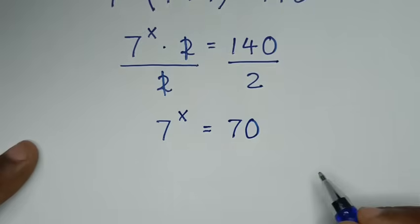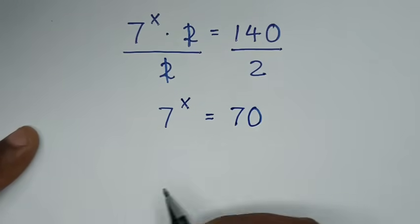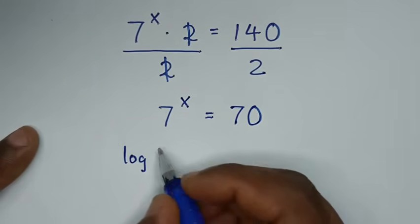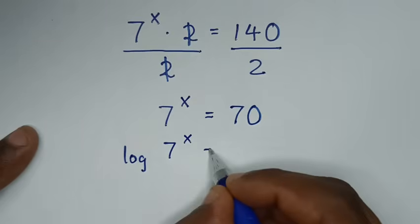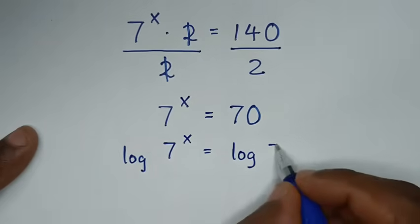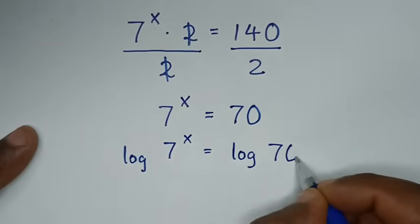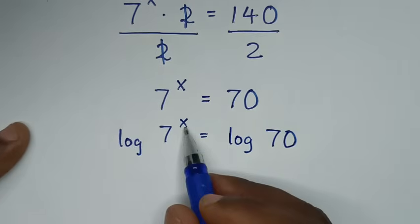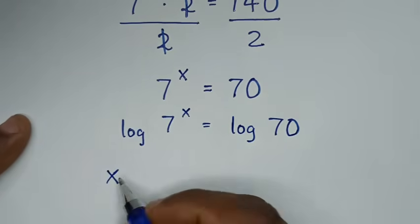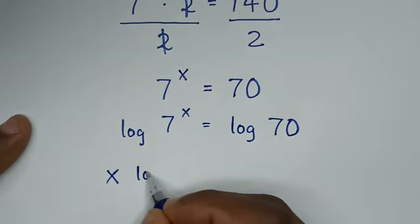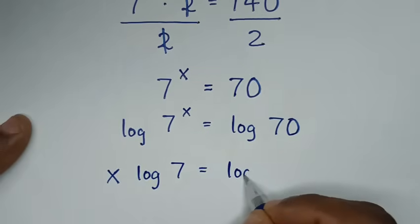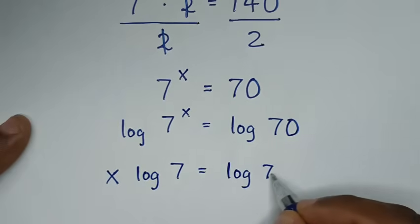Then in the next step, we'll apply log on both sides. So it will be log of 7 power of x is equal to log of 70. Then this power of x will move to the front, so it will be x log of 7 is equal to log of 70.